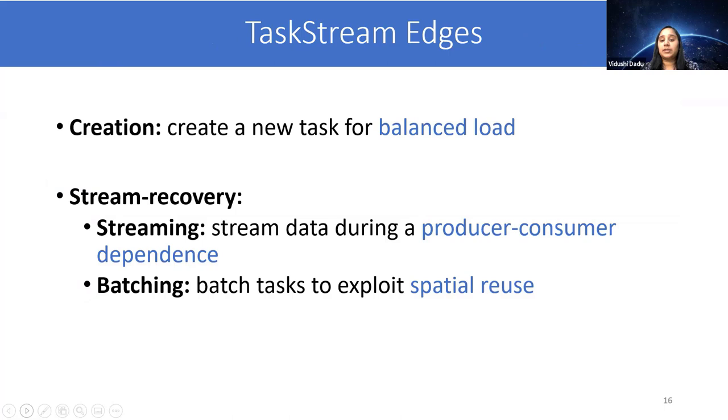The most important aspect of TaskStream is how we exploit the inter-task communication and computation structure, which we do using three edges. The first one is creation that enables balanced load. The other two are stream recovery edges, which involve streaming edge for producer-consumer dependence and batching edge for exploiting spatial reuse.